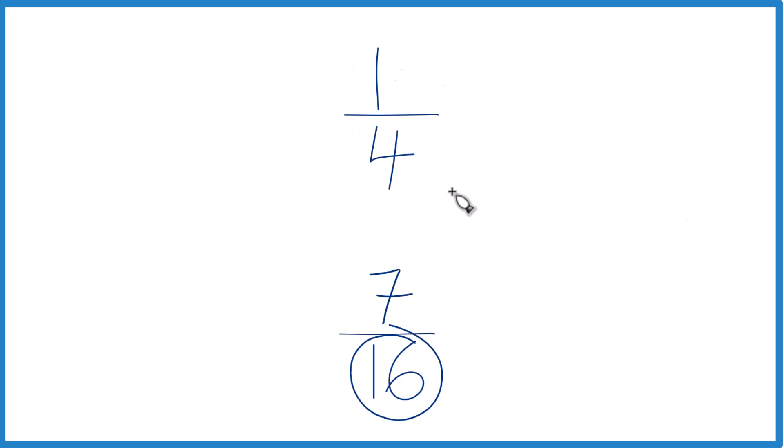1 fourth or 7 sixteenths. So 4 times 4, that equals 16. And that would give us the same denominator here.